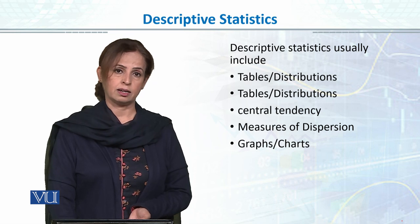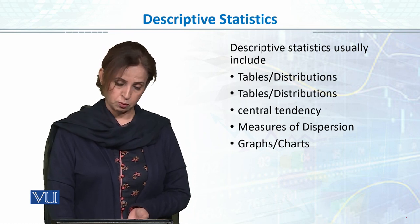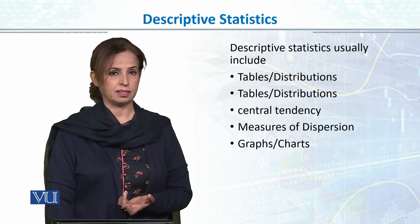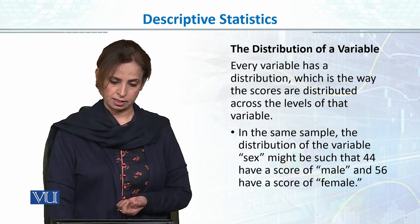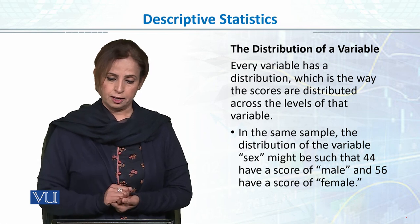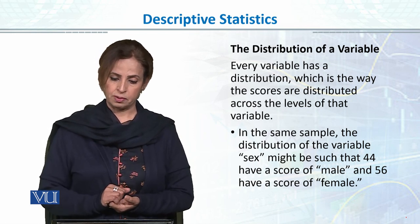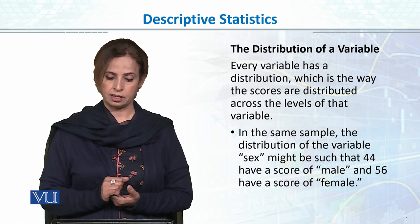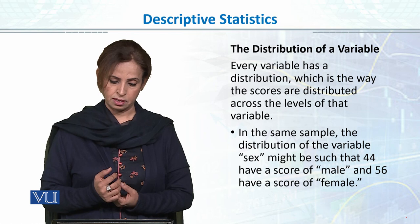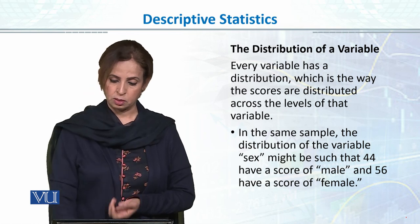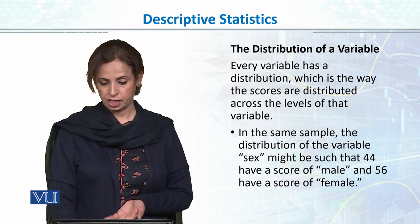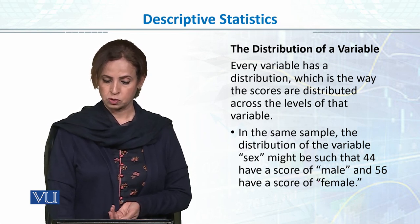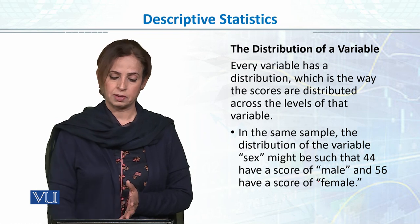SPSS and other graphs, interactive graphs, we will talk about basic graphs. And every variable has a distribution which is the way the scores are distributed across the levels of that variable. In the same sample, the distribution of the variable sex or gender might be such that 44 have a score of male and 56 have a score of female. How does your distribution make it?